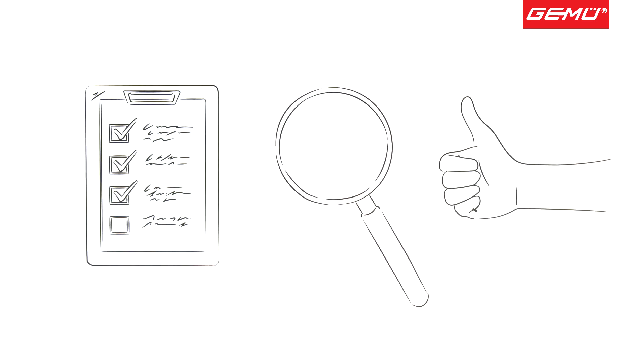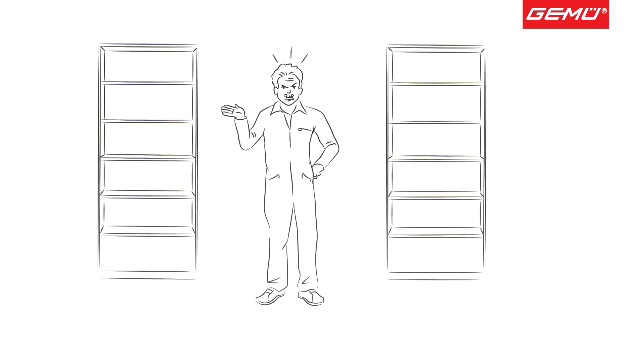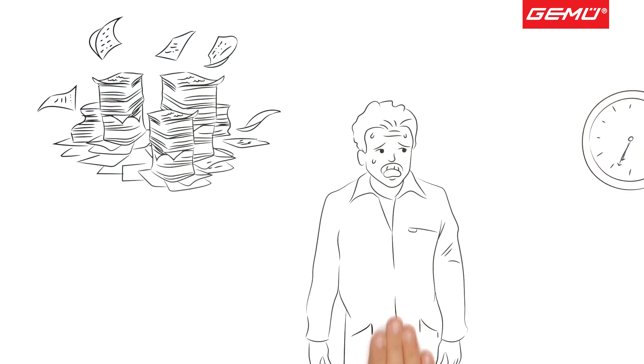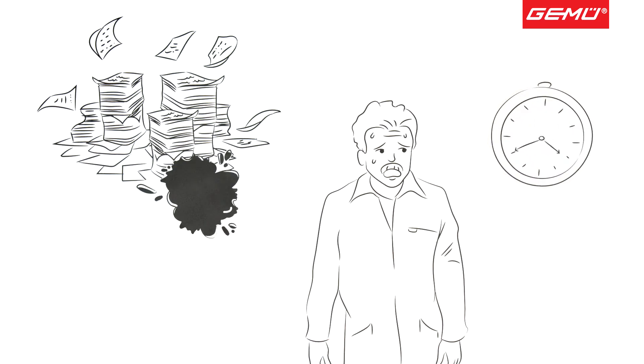Mr. Jones is getting annoyed again because the maintenance reports must be laboriously completed by hand and then archived. This leads to paper chaos, which creates a lot of work and wastes time. Also, something can quickly get dirty or lost.